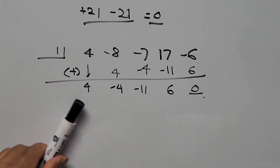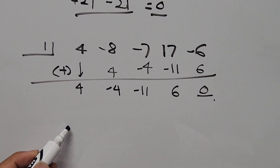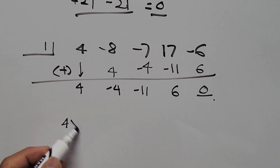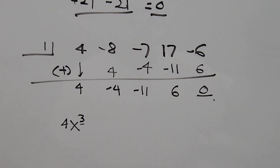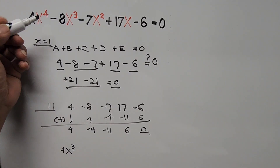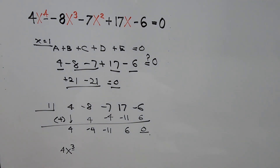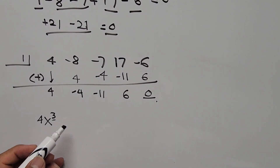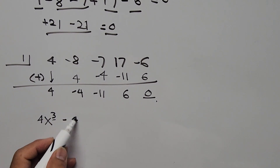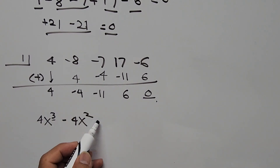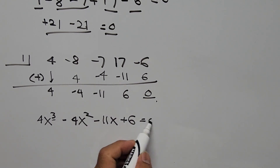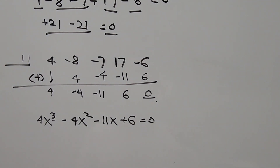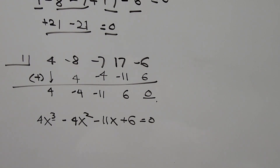These are the coefficients of our new equation, one degree lower than the original. The original was degree 4, so now we have degree 3. The new equation is 4x³ minus 4x² minus 11x plus 6 equals 0 — a cubic equation.